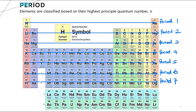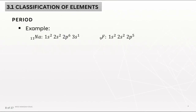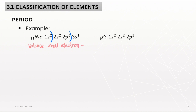The elements in a period are classified based on their highest principal quantum number, N. For example 1, sodium (11): we look at the highest principal quantum number in the electronic configuration. The valence electron shell is 3S1, meaning the highest principal quantum number N equals 3. Therefore, sodium belongs in period 3.